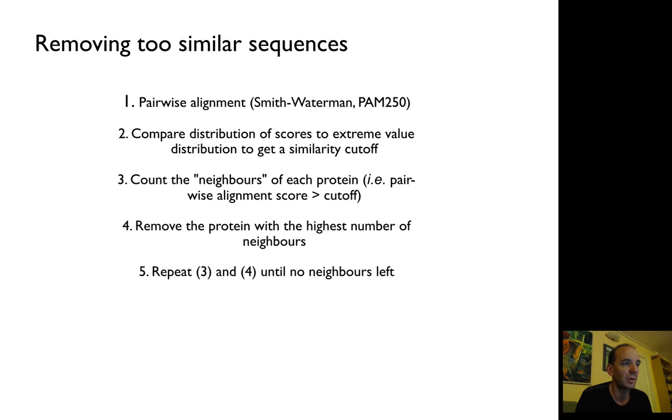Everything that is higher than a cutoff, you take away one of them. You remove the protein with the highest number of neighbors. You repeat this until you have no neighbors left. So basically, no sequence has significant sequence similarity to any other protein in the database or in your dataset.